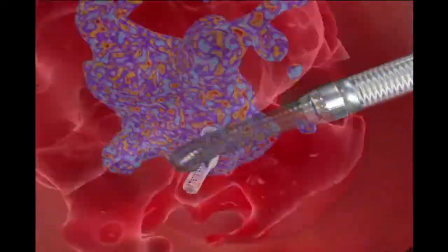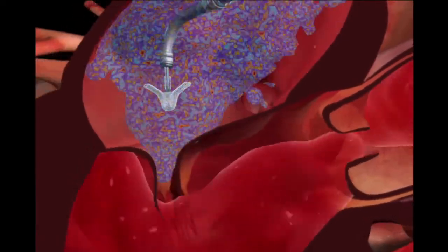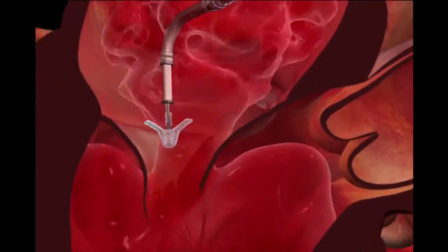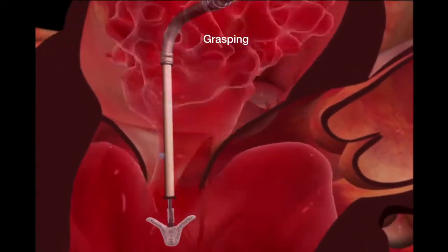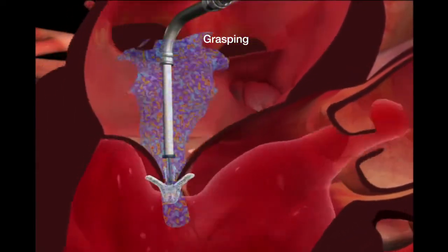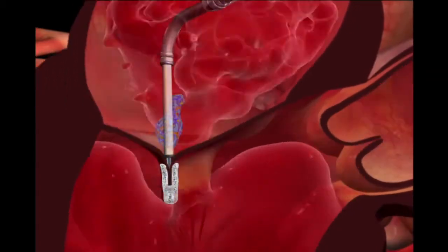Color ultrasound imaging identifies the severe MR illustrated here with blue flow. The clip is advanced into the left ventricle below the valve leaflets. The clip is retracted and closed to hold the leaflets together to reduce MR.